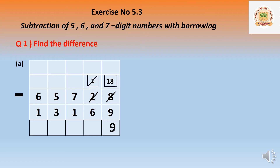We borrow from the hundreds place. The 700 becomes 600, and the tens become 110 — that is eleven. Eleven minus six equals five. Now hundreds place: 6 minus 1 — easily minus, equals 5. Thousands place: 5 minus 3 equals 2. Ten-thousands place: 6 minus 1 equals 5. Answer is fifty-two thousand five hundred and fifty-nine.